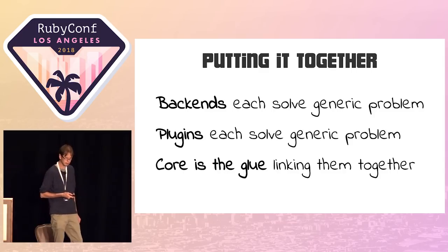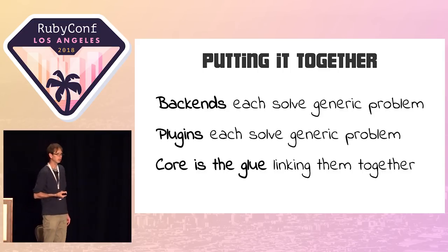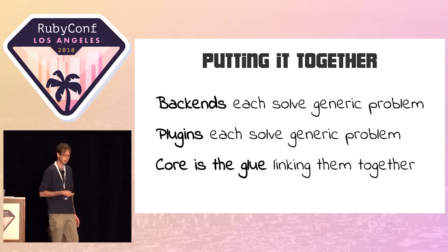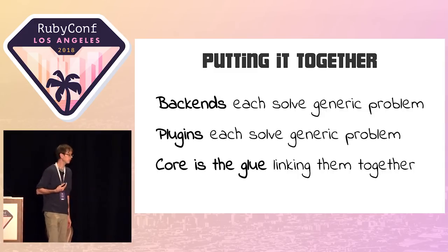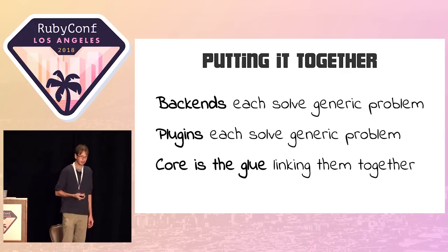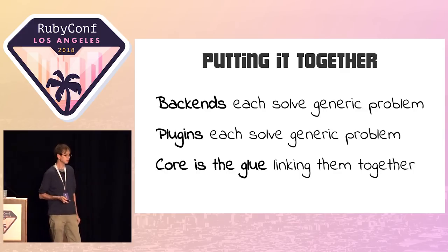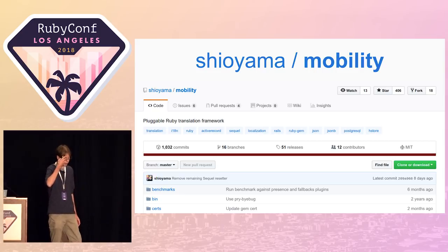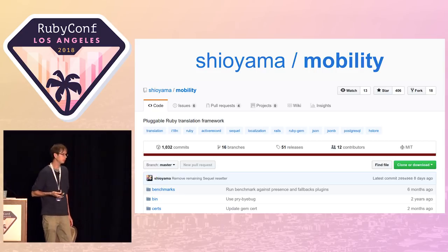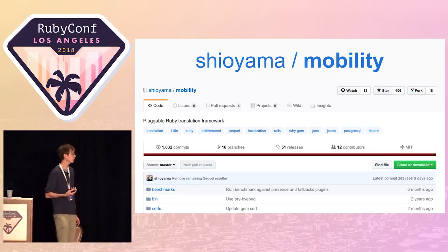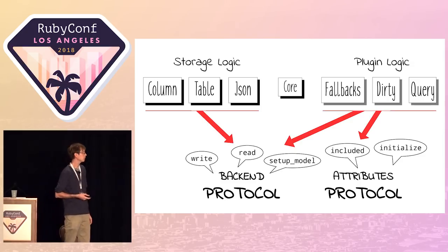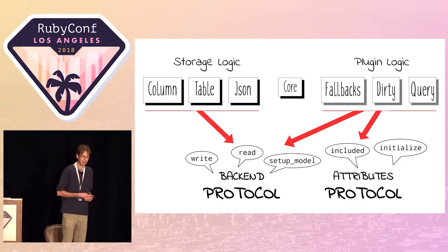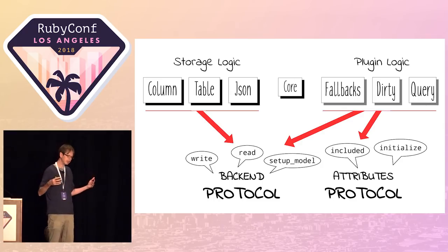The key thing is that the plugin doesn't need to know anything about storage, and the backend doesn't need to know anything about the extra feature on top. We've decoupled these things. Putting it all together: backends each solve a generic problem — translatable columns, translation tables, JSON translations. Plugins each also solve a generic problem. The core is what glues everything together. And now I can tell you this is actually a gem I've been working on for the last couple of years, called Mobility. Mobility is a pluggable Ruby translation framework, supporting all these different types of strategies for storing and accessing translations.